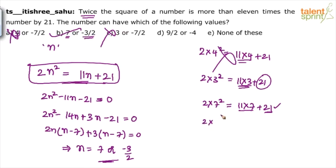Verify the second value. 2 into, N square. So minus 3 by 2 square. Minus 3 by 2 square equals to 11 times the number minus 3 by 2 plus 21. Now minus 3 by 2 whole square will become 9 by 4. 2 into 9 by 4 is like 9 by 2 equals to 21 minus 33 by 2. So this is like 42. 42 minus 33 is again 9 by 2. So balanced or not? Yes. Option B is the answer.